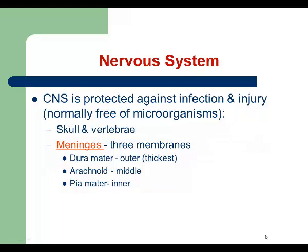Our central nervous system is protected against infection and injuries. There are a few layers that protect it. The first layer consists of bones — the skull and vertebrae. The next layer is the meninges, or three membranes. The most outer layer is called dura mater and is the thickest membrane. The most inner layer is called pia mater. In between there is the arachnoid, and the space between the arachnoid and pia mater is called the subarachnoid space.